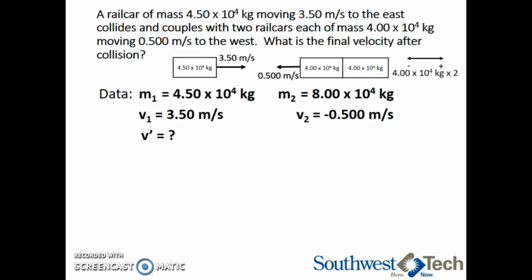Since we have an inelastic collision, the basic equation we need is M1 V1 plus M2 V2 equals the sum of M1 plus M2 multiplied by V prime, which is the velocity after collision.